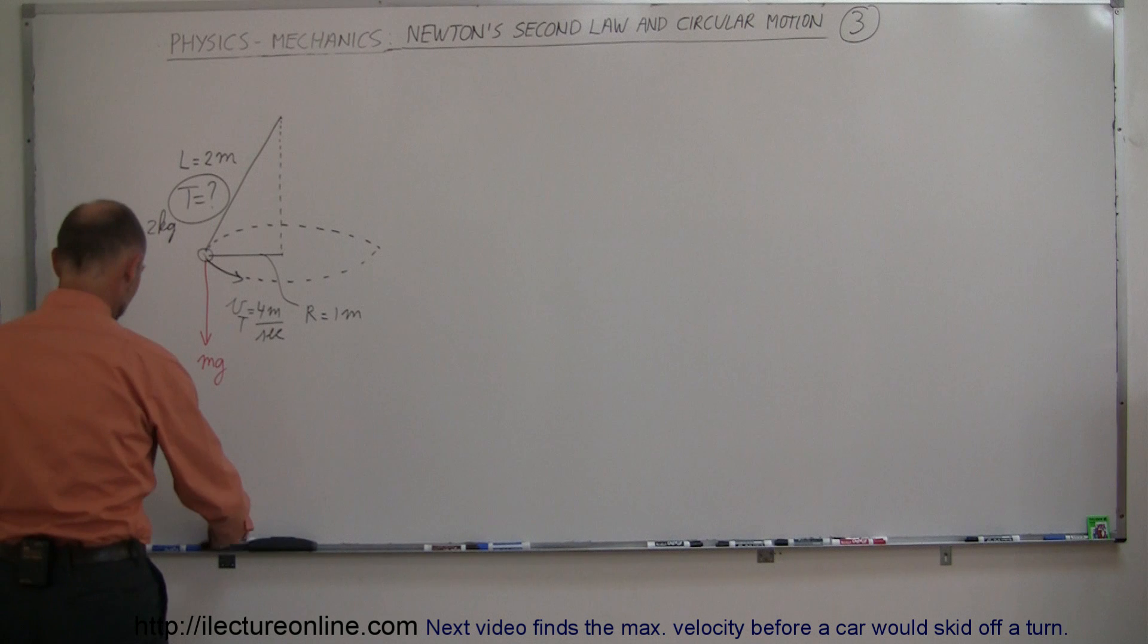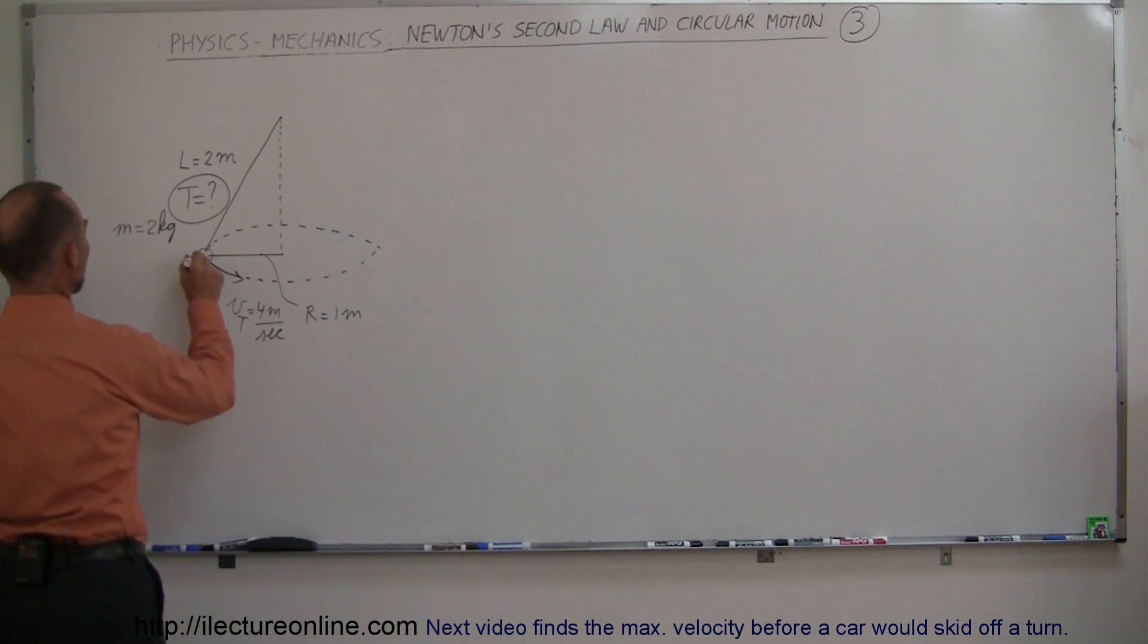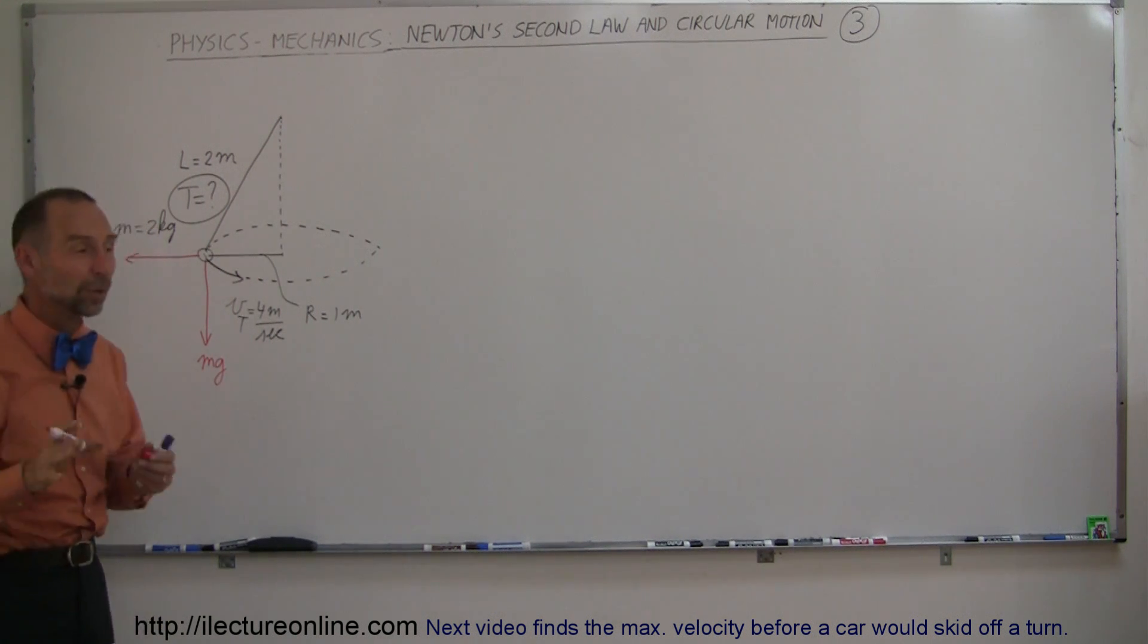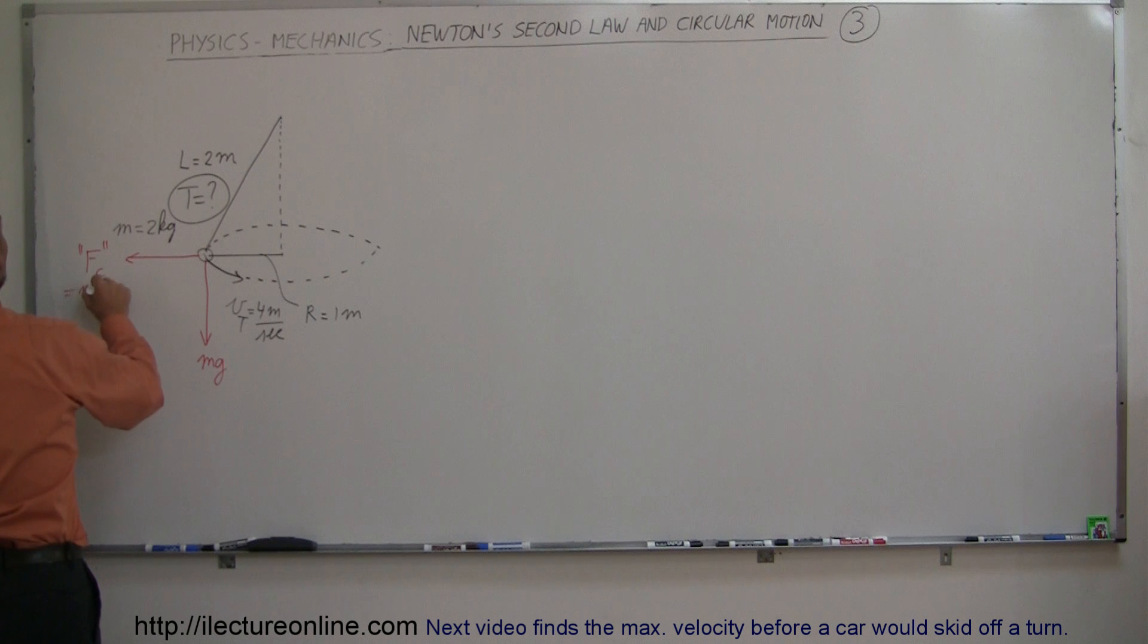We have this fictitious centrifugal force pushing to the outside, caused by the circular motion. We call it F_c in parentheses because it's not a real force, it's fictitious. This equals mv squared over r.